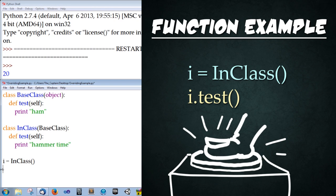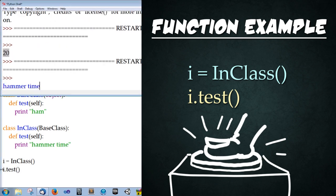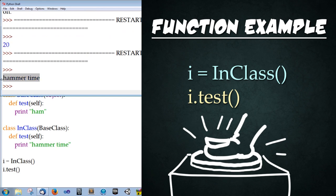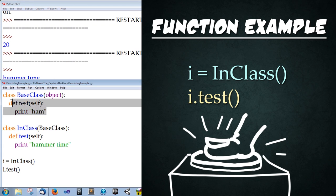Now we're going to call that function. I dot test, open, close parenthesis, save, run, boom, hammer time printed out. Perfect. That's exactly what we wanted. So what did we just do? We created a function in the base class and then overrode it by creating the function with the same name and same parameters in the inheriting class.